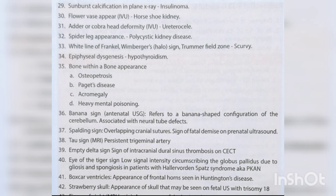Adder or cobra head deformity — ureterocele. Spider leg appearance — polycystic kidney disease. White line of Frankel, Wimberger's halo sign, Trümmerfeld zone — scurvy. Epiphyseal dysgenesis — hypothyroidism. Bone within a bone appearance — osteopetrosis, Paget's disease, acromegaly, heavy metal poisoning.